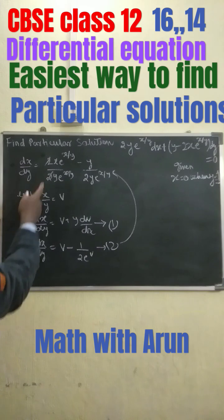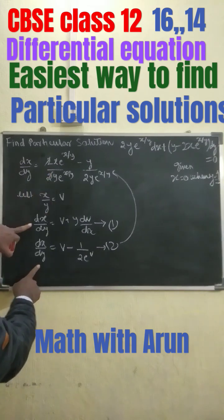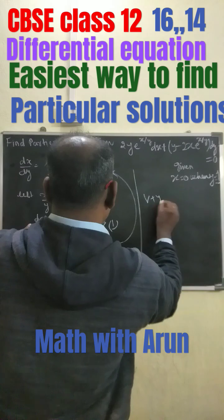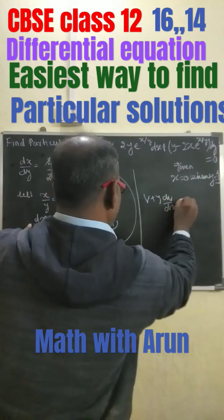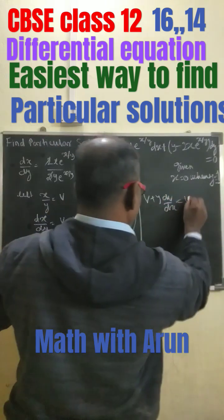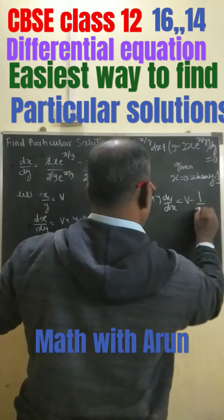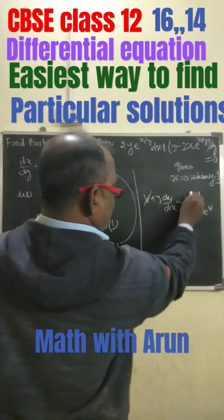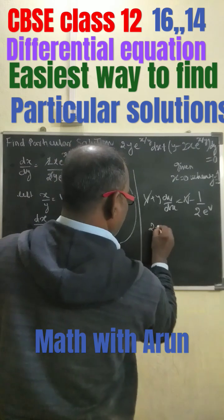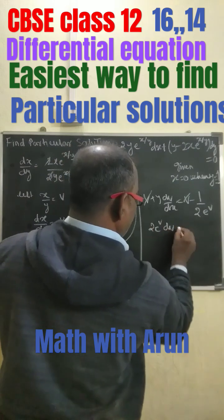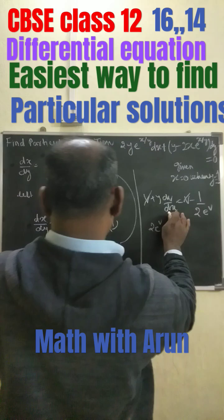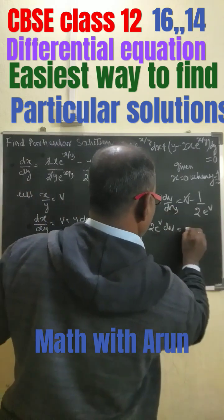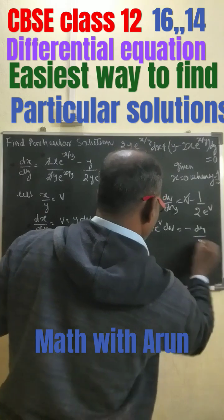So from equation 1 and this equation we get: v plus y · dv/dx equals v minus 1 divided by 2^v. The v terms cancel off. We get 2^v dv equals minus dy/y.